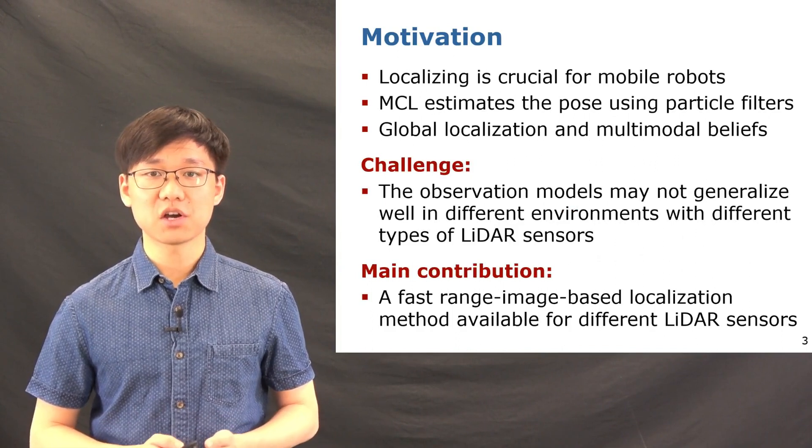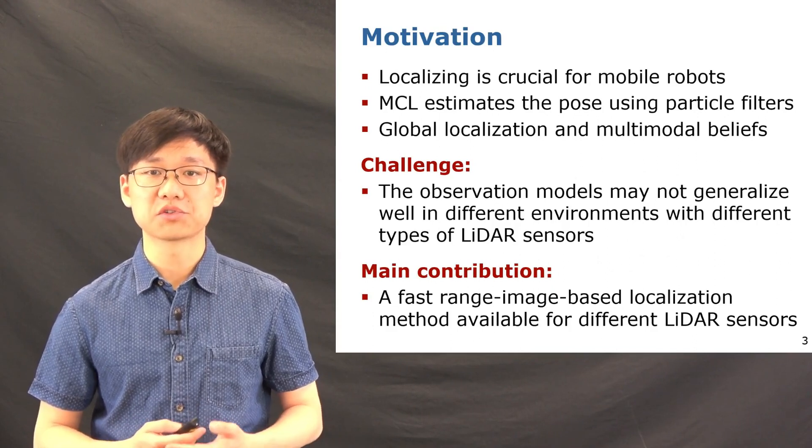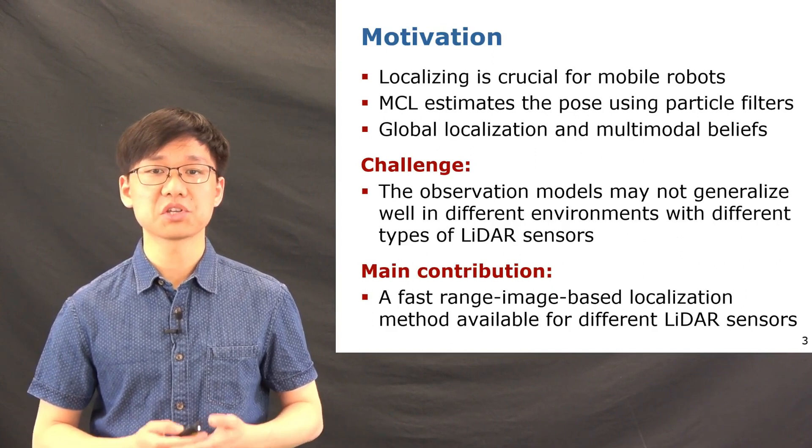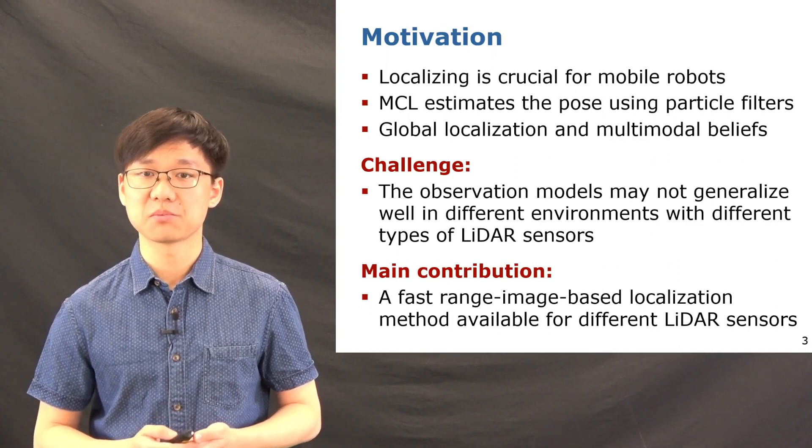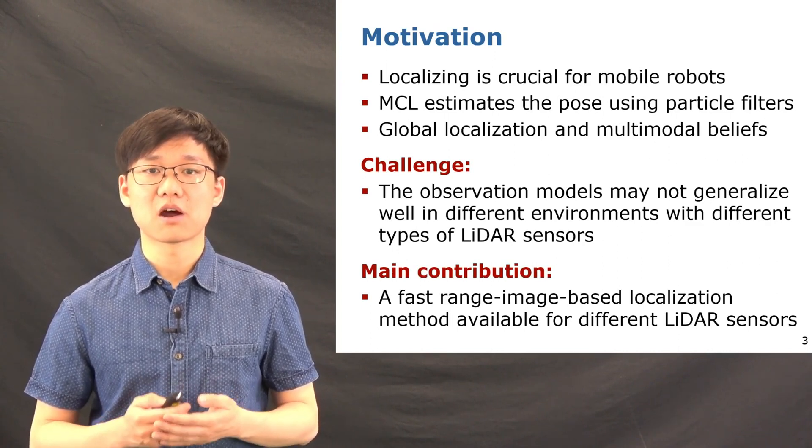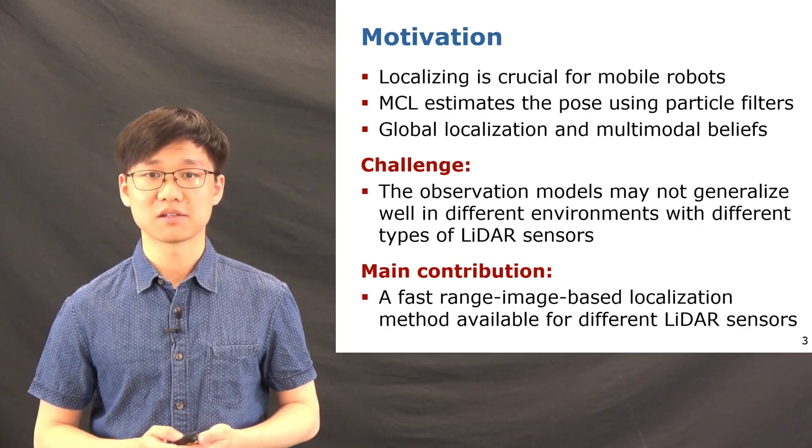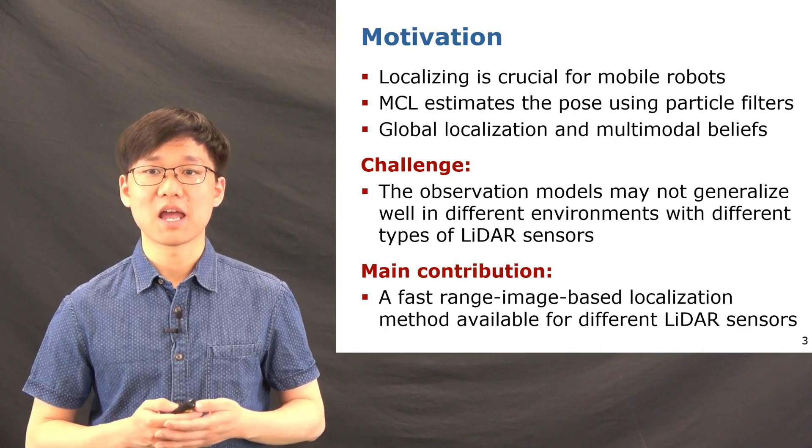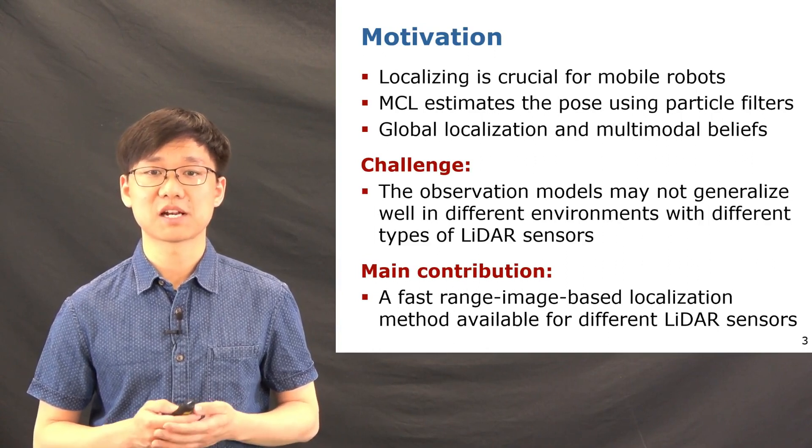The challenge of Monte Carlo localization is that the observation model is very important, but can be hard to use in different environments with different types of LiDAR scanners. The contribution of this work is that we proposed a novel range image based observation model for Monte Carlo localization using the triangular mesh maps. Our methods can achieve good global localization results in changing outdoor environments. We also test our methods with multiple different datasets, and the experimental results show that it generalizes well to different environments using different LiDAR scanners.